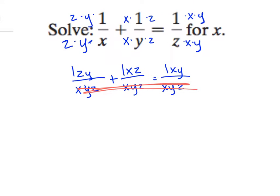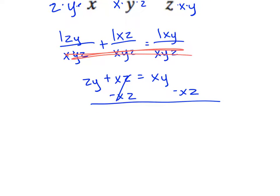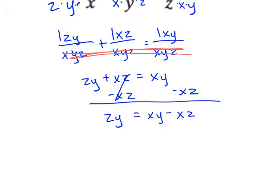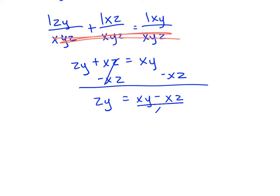And now I can get rid of those denominators. And so my equation ends up being zy plus xz equals xy. And if I want to get x alone, I need to bring these two x's together. So I'm going to subtract xz to bring it to the other side with the other term that has x. And so I end up with zy equals xy minus xz. And I bring those together not because they're like terms. These are not like terms.